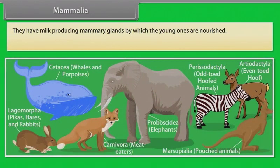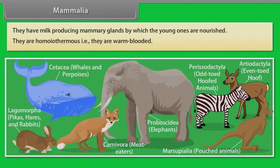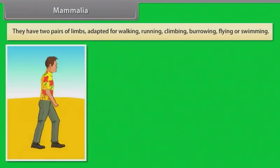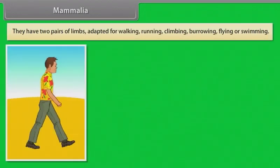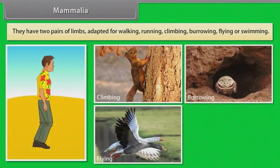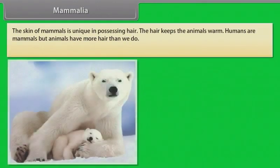Mammalia. Mammals have milk-producing mammary glands by which the young ones are nourished. They are homeothermous, that is, they are warm-blooded. They have two pairs of limbs adapted for walking, running, climbing, burrowing, flying or swimming. The skin of mammals is unique in possessing hair, which helps keep the animals warm.